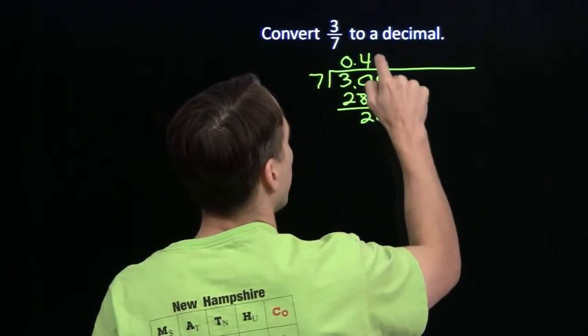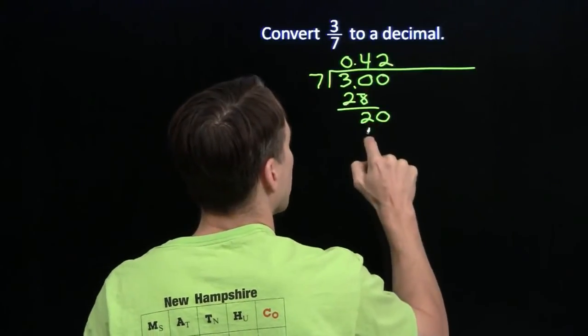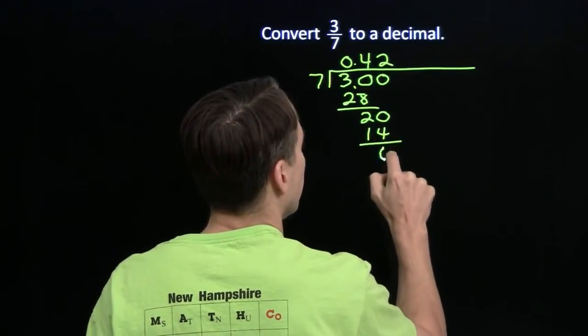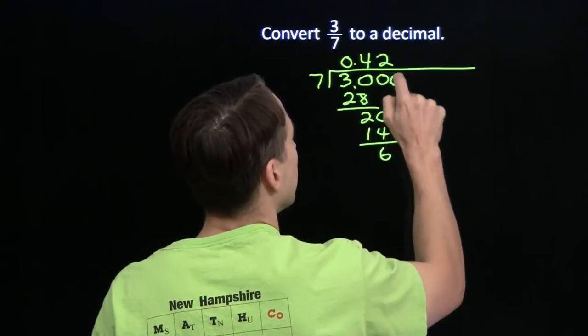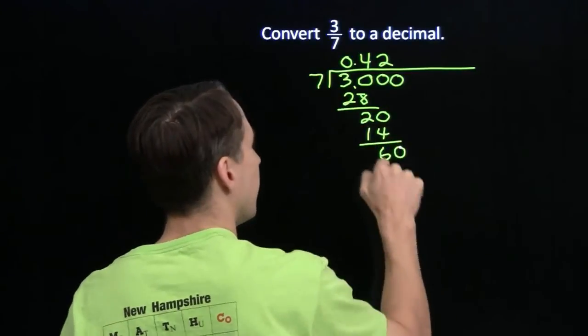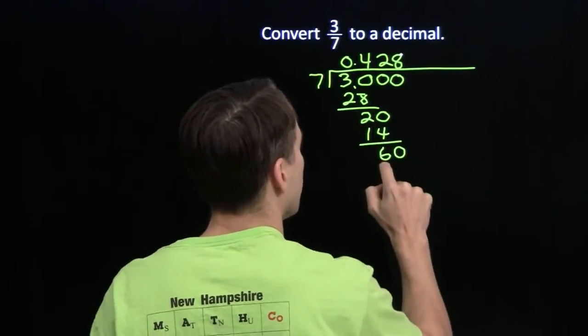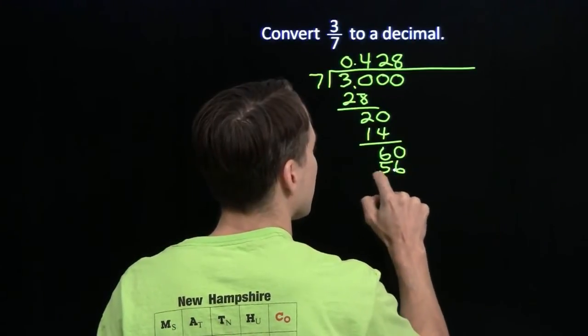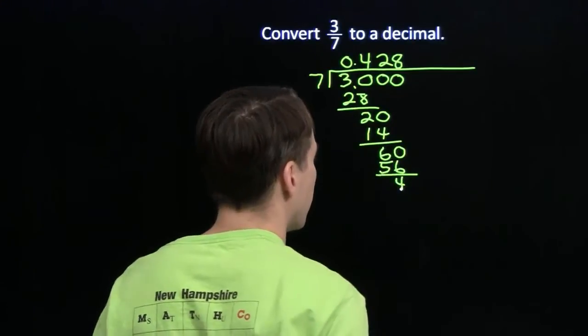So we need hundredths. 7 into 20, that goes 2 times. 2 times 7 is 14, that leaves us 6 left over. Need another 0. 7 into 60, that goes 8 times. 8 times 7 is 56, that gives us 4 left over.